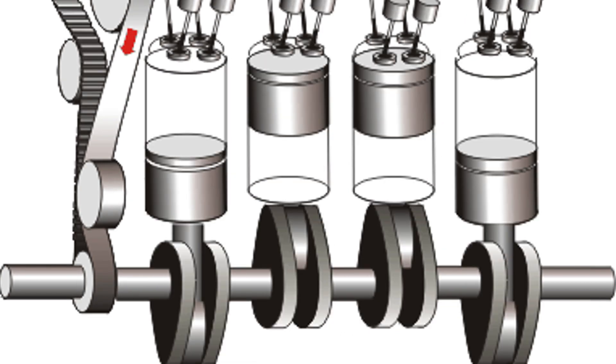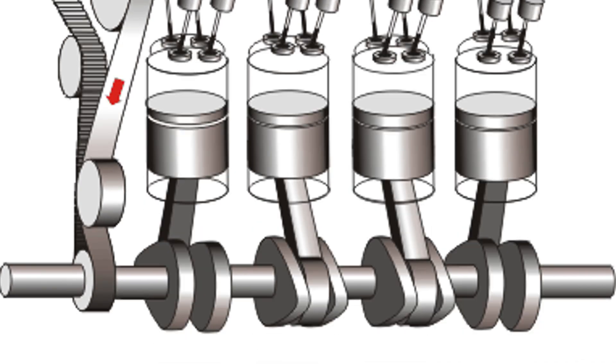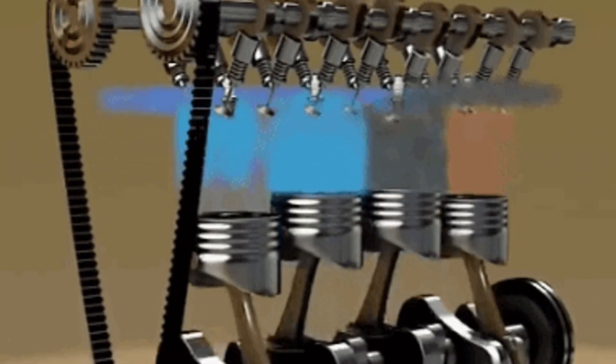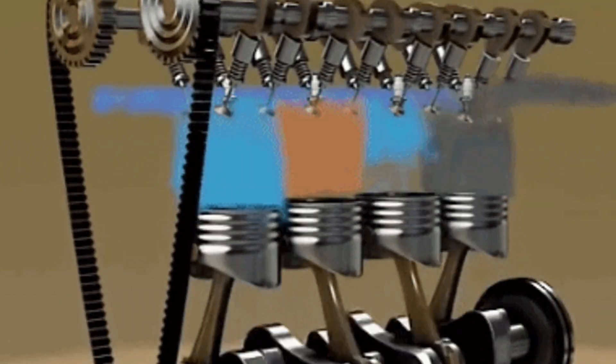In the third step, a spark ignites the fuel, pushing the piston down and creating power. Finally, the piston comes back up again to push out the exhaust gases. Only one of these four strokes actually produces power.